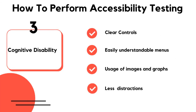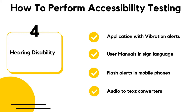To deal with cognitive disability: check whether the controls are clear and easy to use, menus are understandable, and there is maximum usage of images and graphs instead of text. Test whether the user can complete a task without unnecessary distractions like alerts or advertisements, and validate whether there is an option to find human help. For hearing disability: test whether the application alerts users with vibration even when that feature is turned off, provide manuals in sign language, include LED flash alerts on mobile phones, and ensure audio-to-text converters are in place.